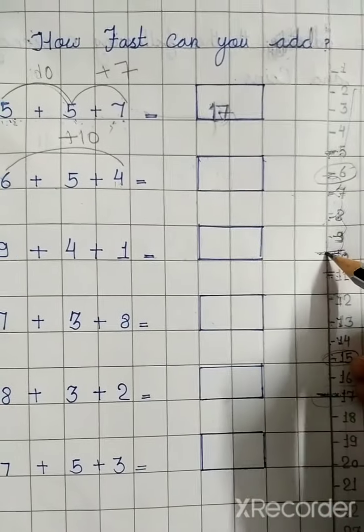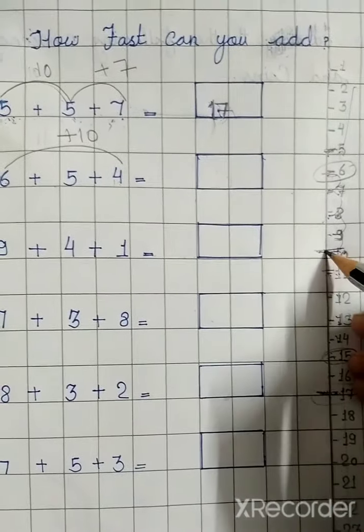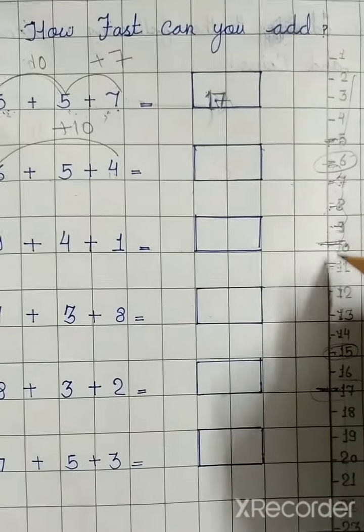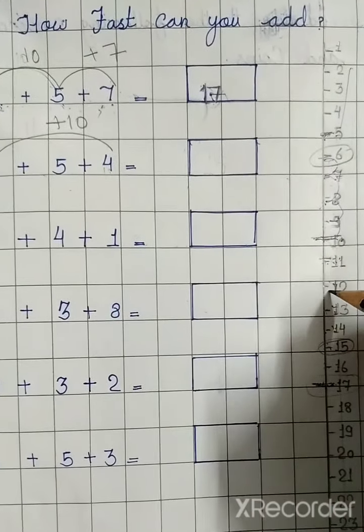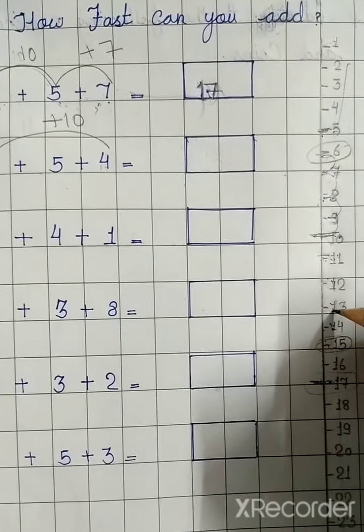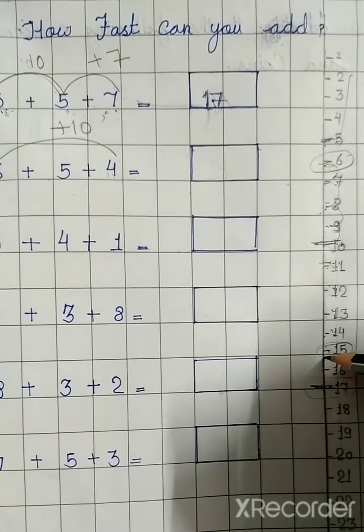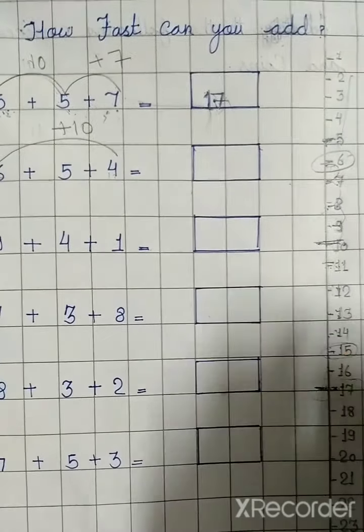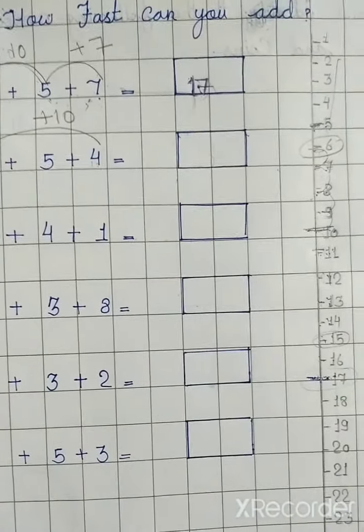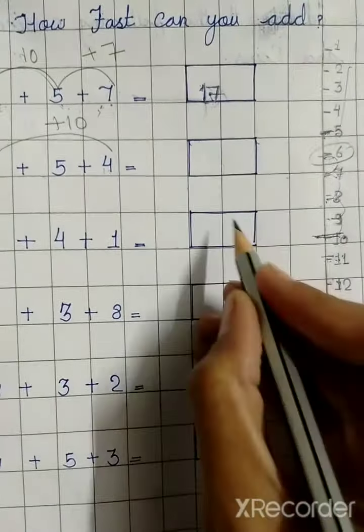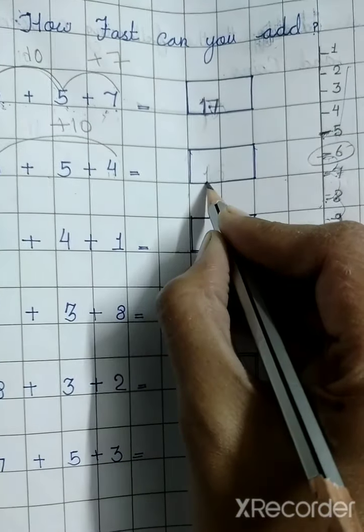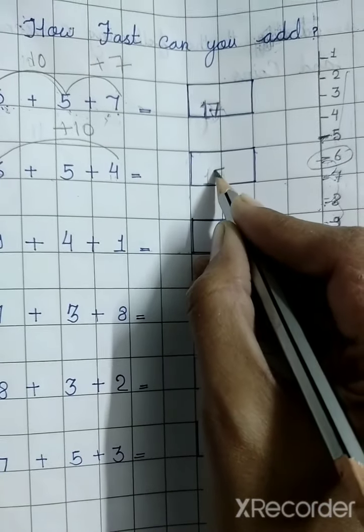Ab yahan se 5 step aage move karenge: 1, 2, 3, 4, 5. Kya aaya hamare paas? 15. Toh hum yahan kya likhenge? 15. (Now from here we move 5 steps forward, getting 15. So we write 15.)